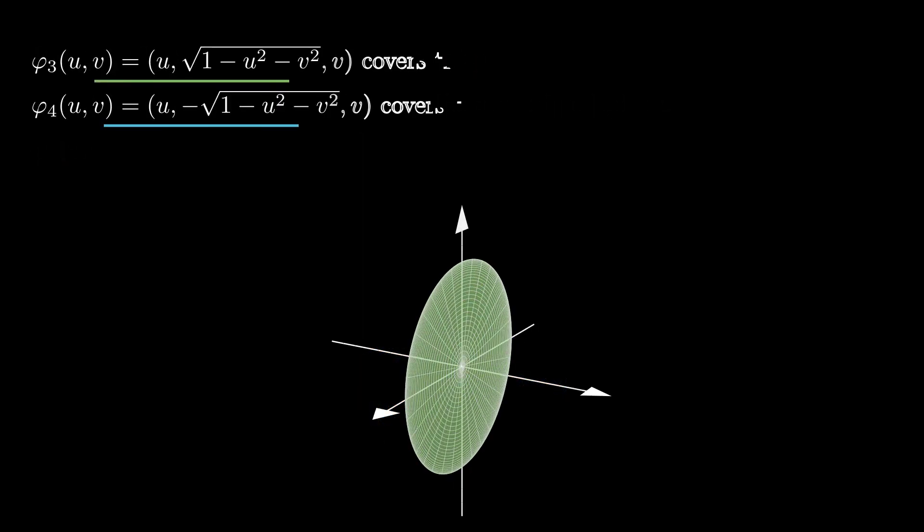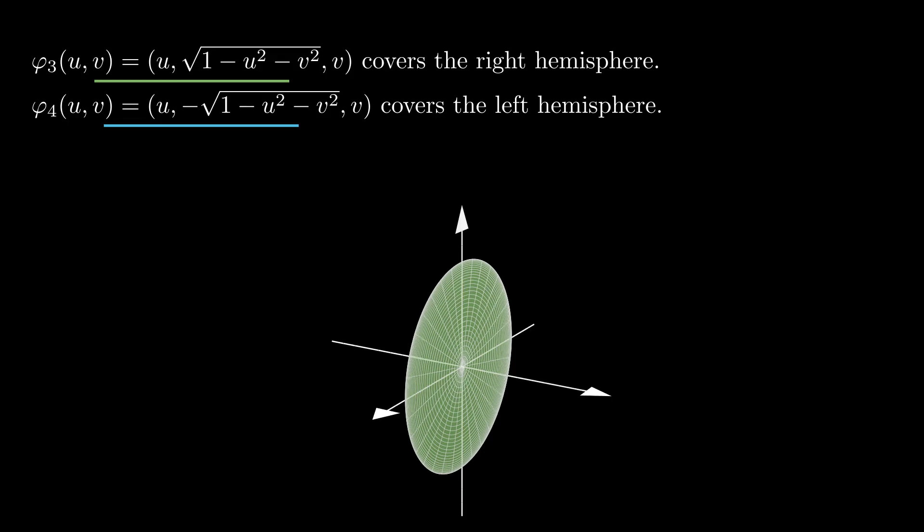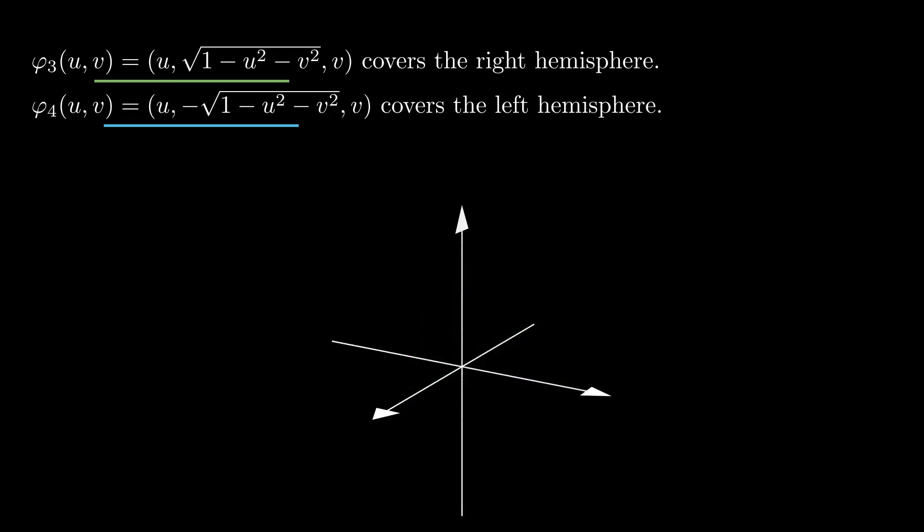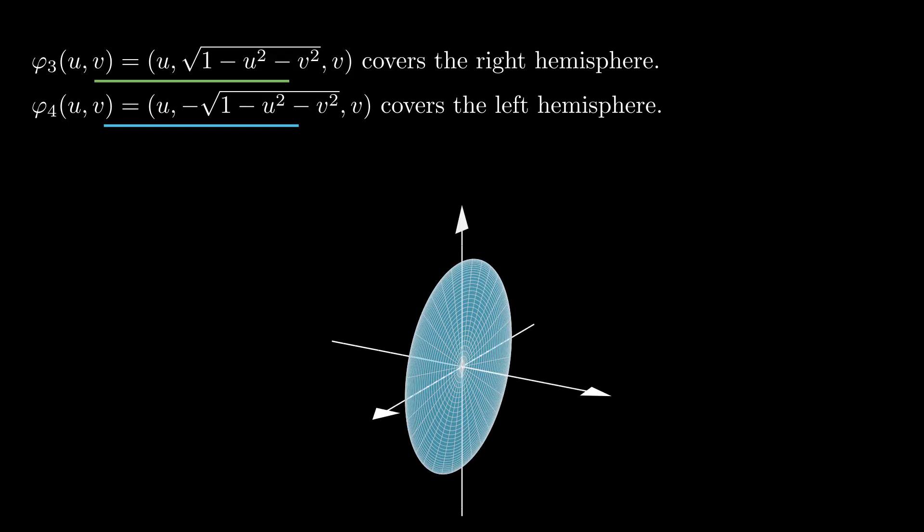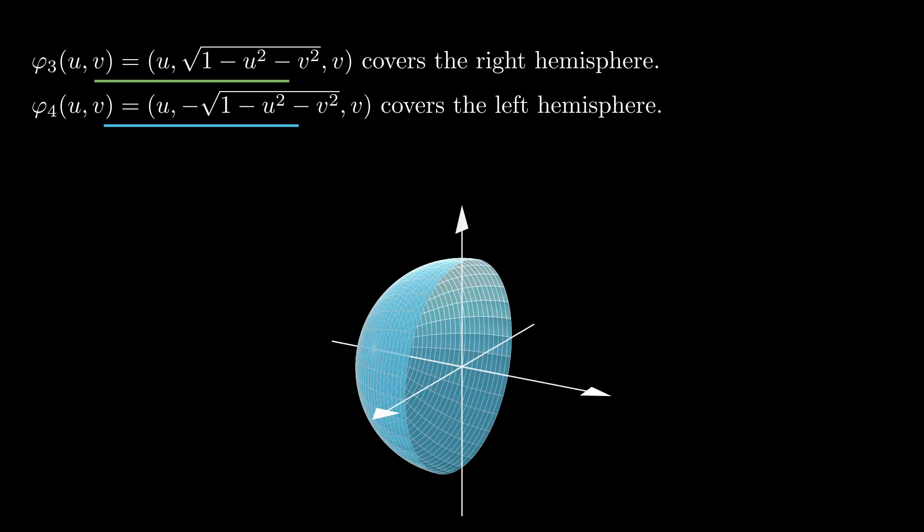These two parametrizations together cover everything except the equator. To cover the equator, one can simply permute the coordinates of phi to obtain charts that cover the hemisphere with positive y coordinate, or the hemisphere with negative y coordinate, etc.